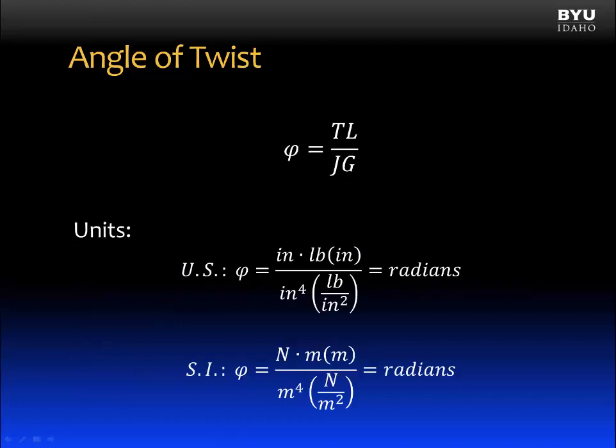Let's talk about units. The units in both the US and the SI system for angle of twist is radians. In US units, we see that torque is typically in inch-pounds, length in inches, J in inches to the fourth, and G in pounds per inch squared. All of these units cancel out. The same is true in the SI system.